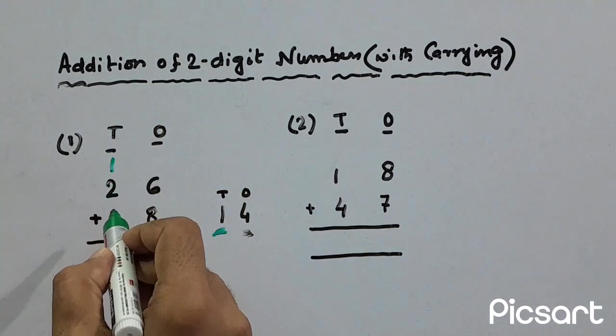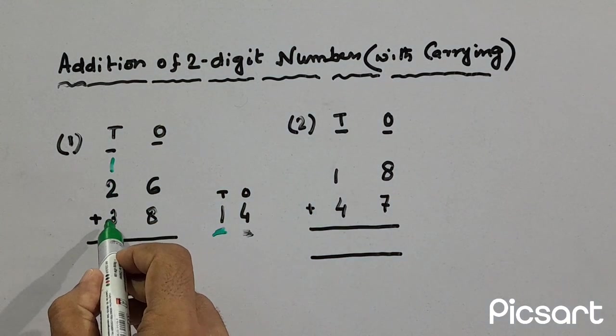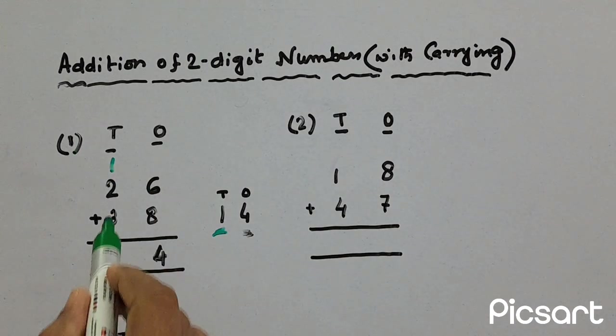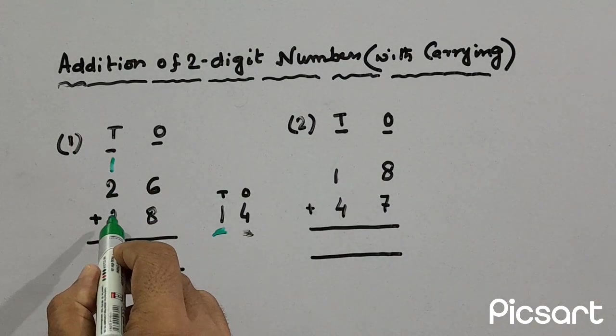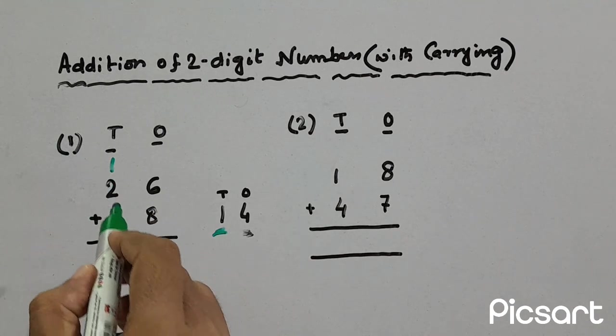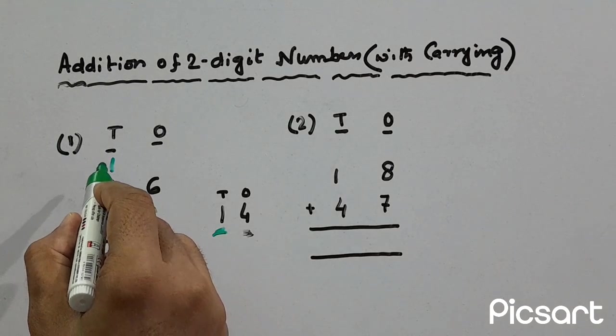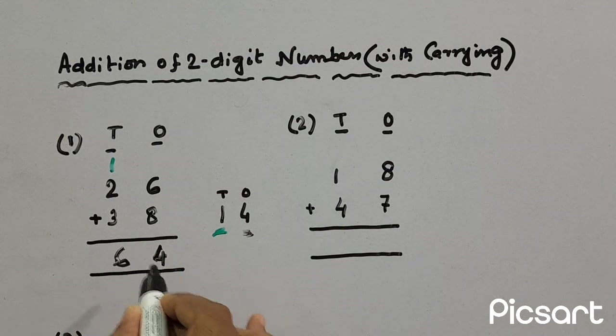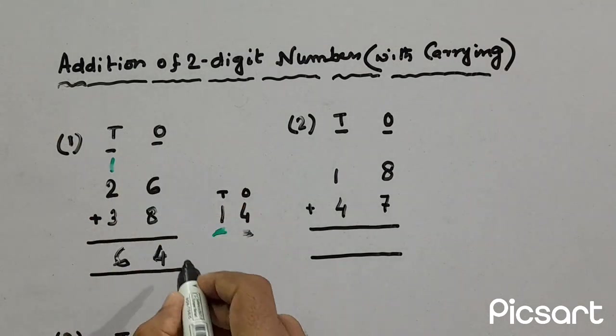Now in tens column, we have three tens plus two tens plus one ten. If we add all this, so three plus two is five plus one, that means six. So 64 is the answer here.